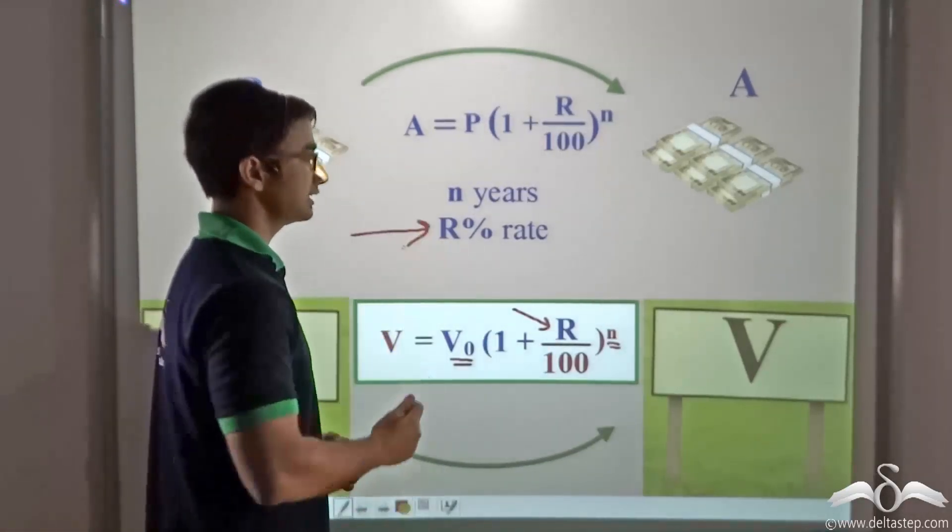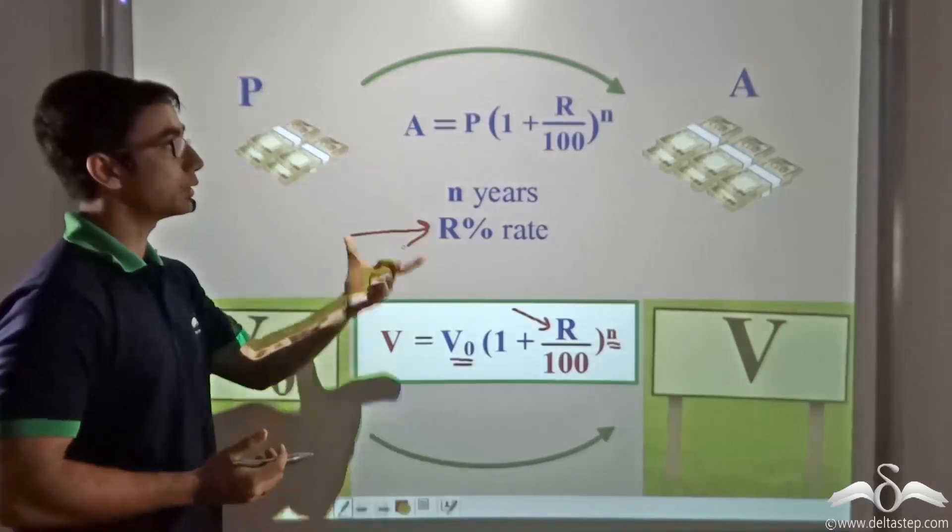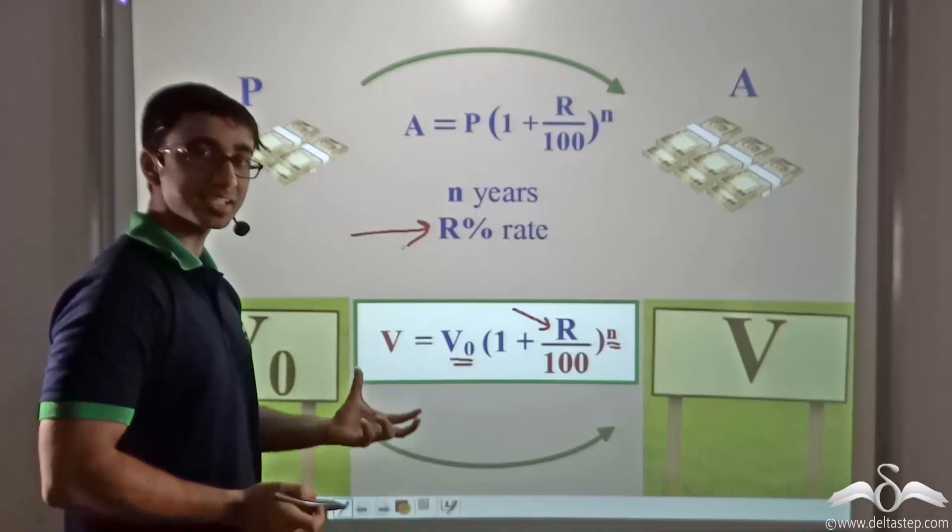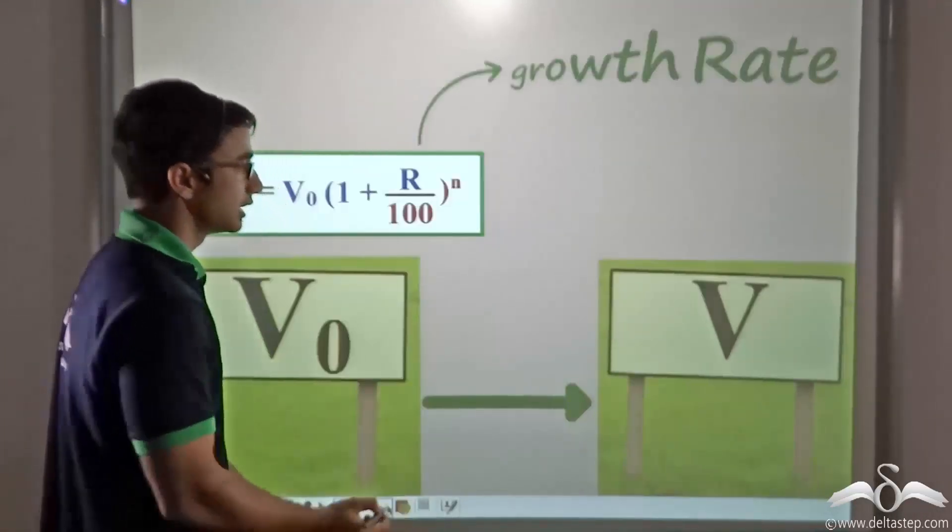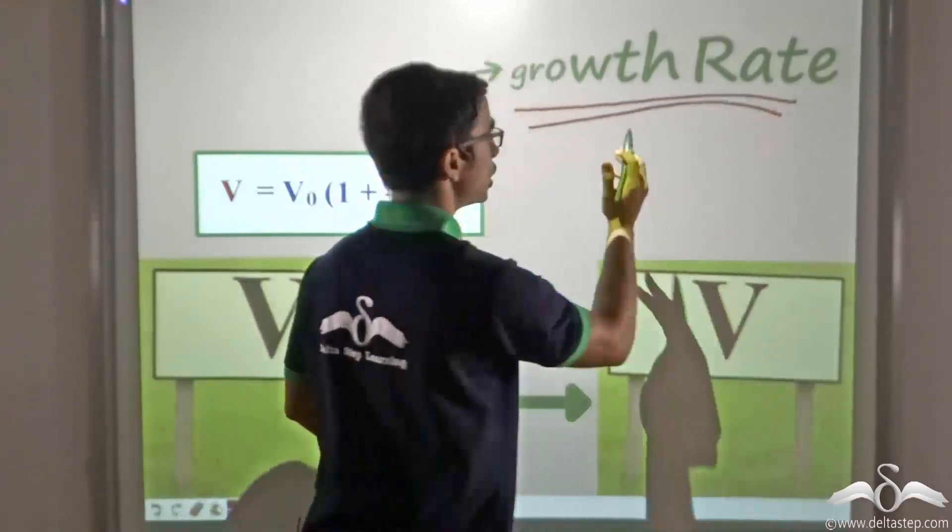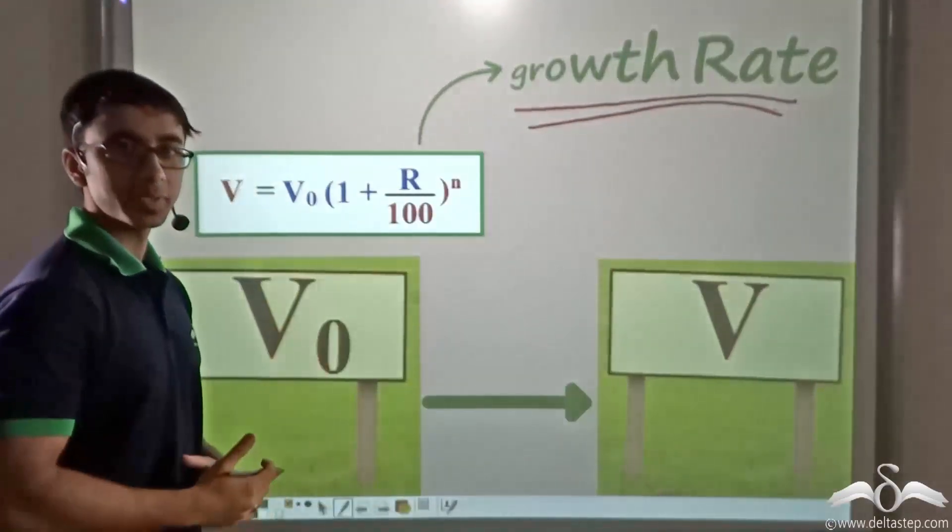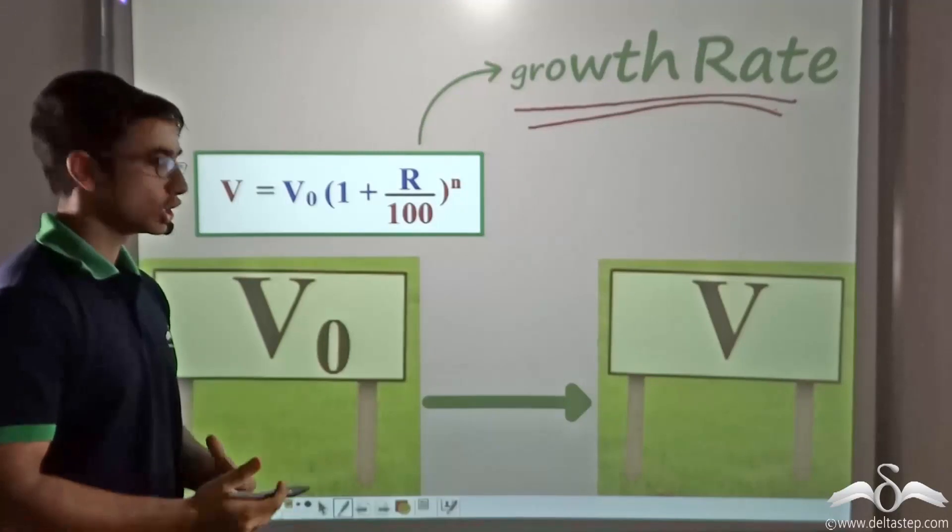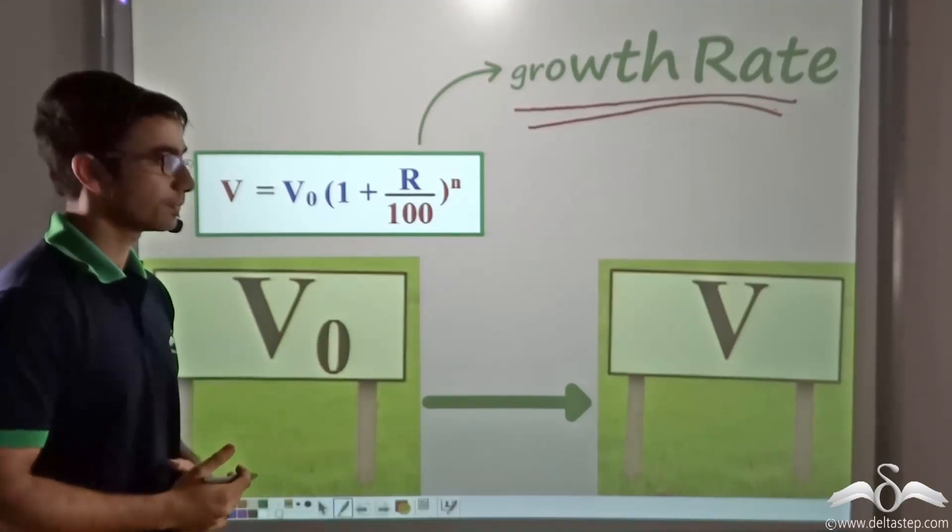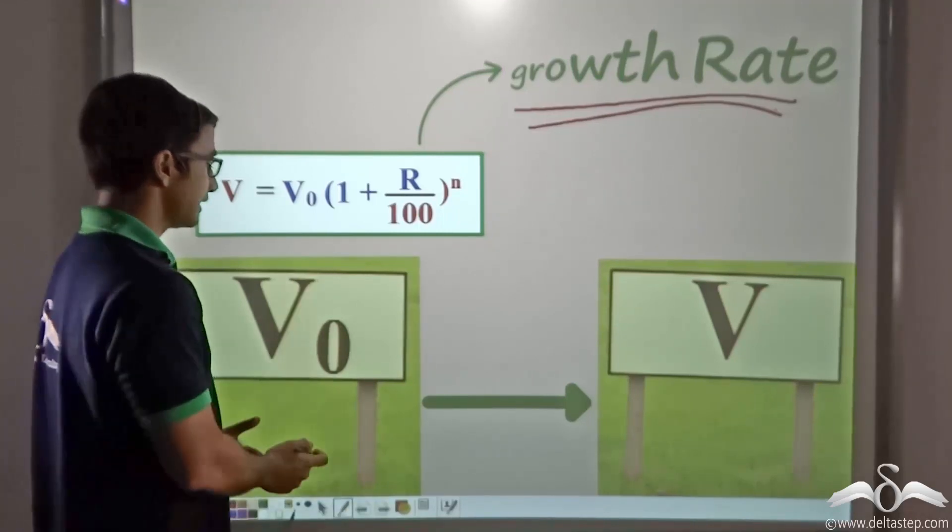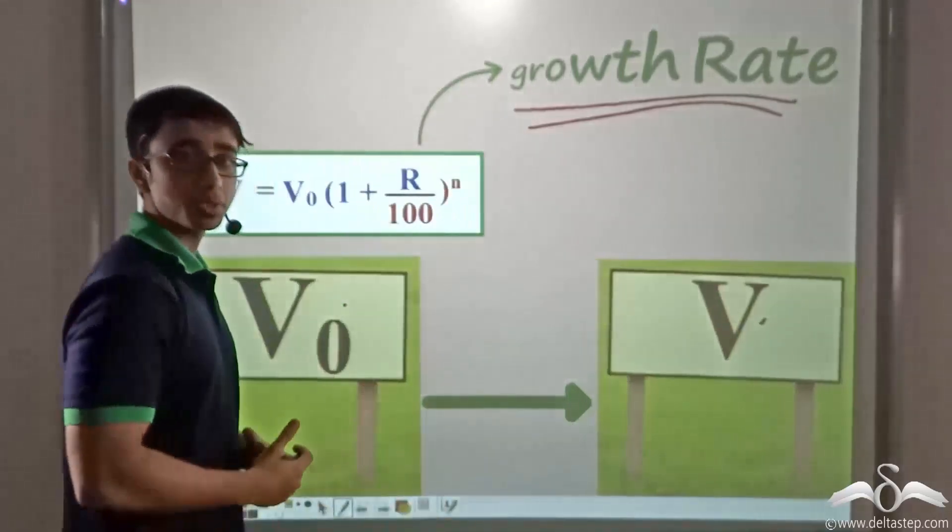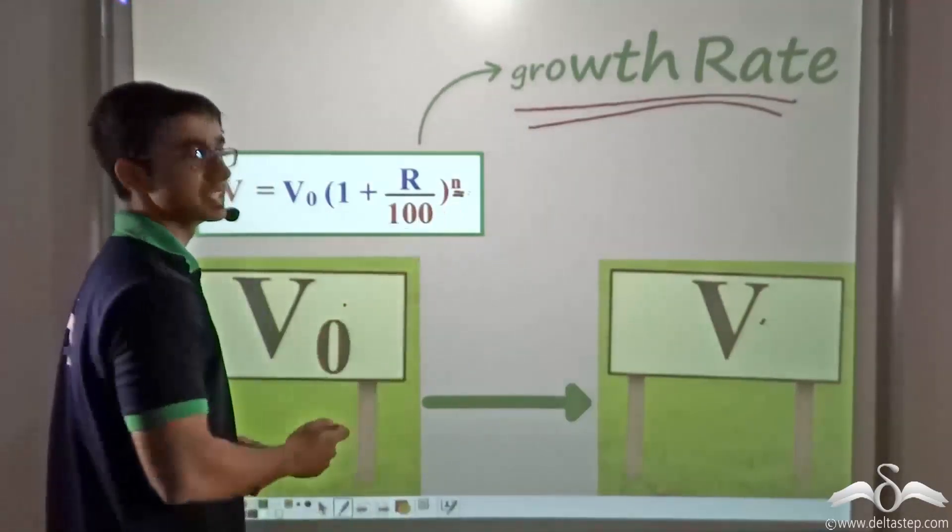So this R percent which is known as the rate of compound interest in case of money has a particular name in this case as well. R is known as the growth rate, or in other words the rate at which the value or the price of a plot of land or any other commodity grows. So we find that the value of land has grown from V0 to V in a given number of years, that is N years.